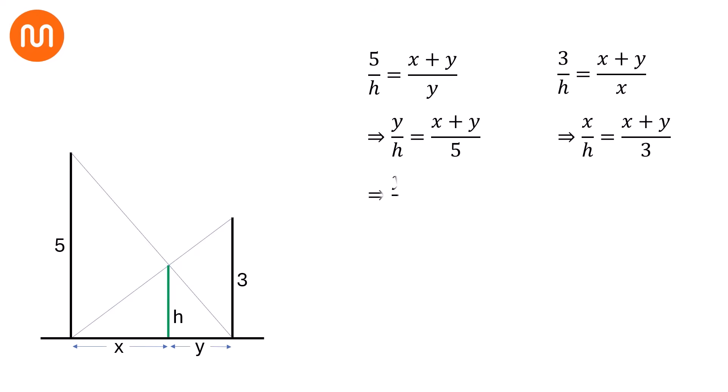Adding these two equations, we will have y over h plus x over h is equal to x plus y over 5 plus x plus y over 3.